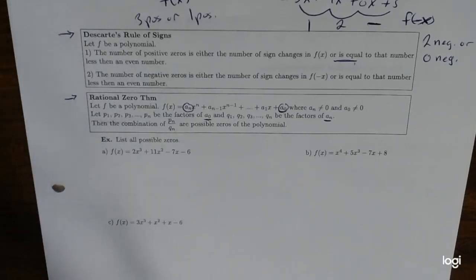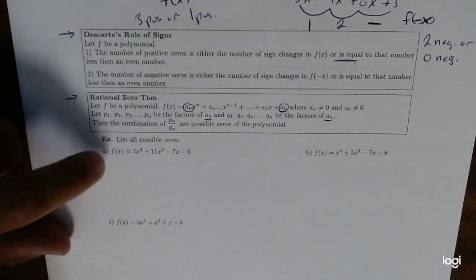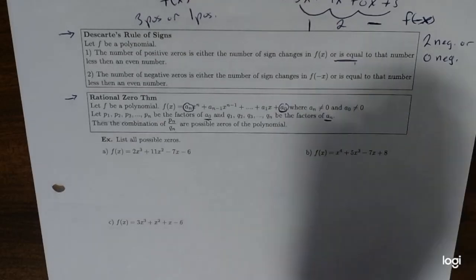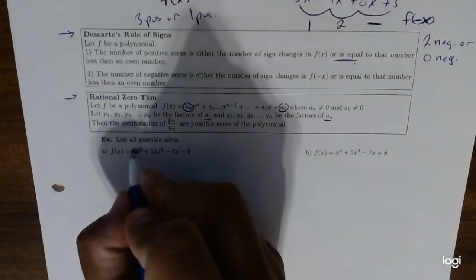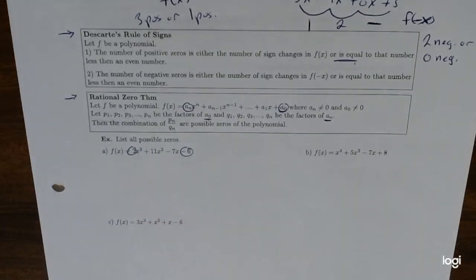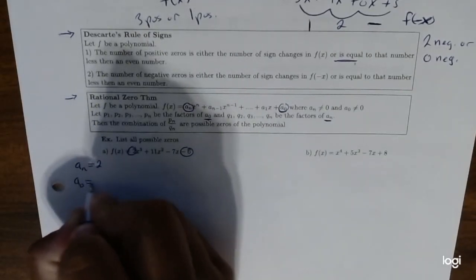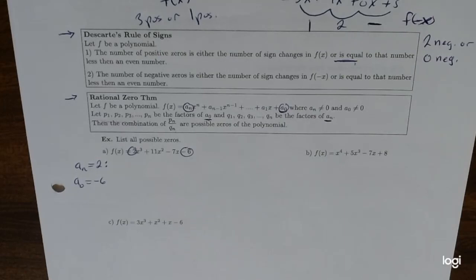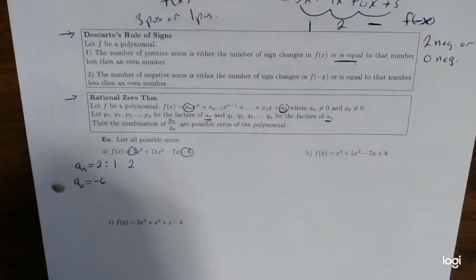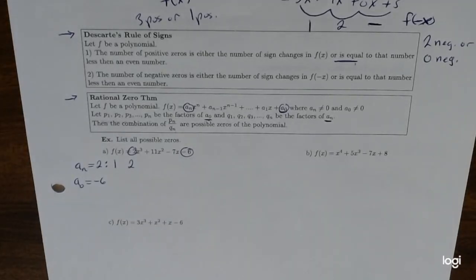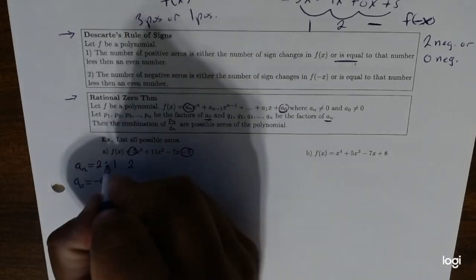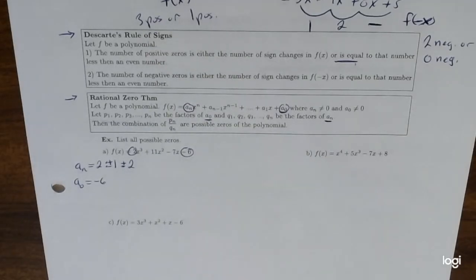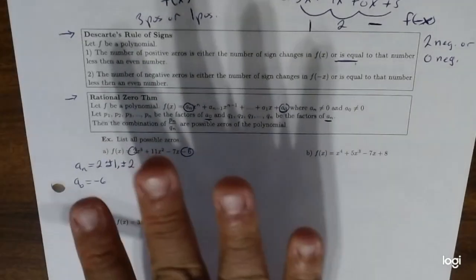So let's try a little example. Let's list all the possible zeros of this polynomial. We're going to use the Rational Zero Theorem. The first thing we care about is just the first and the last number. So our A_sub_N is equal to two, and our A_0 is equal to negative six. Now we want to literally list out all the possible factors of two. Negative one times negative two gives you two. So you actually have twice as many factors as you may think, because you're including the plus and minuses as well.